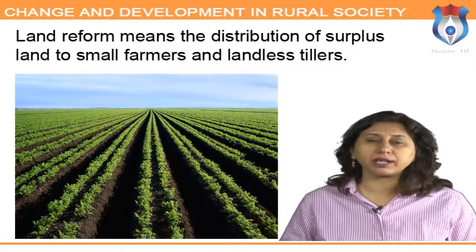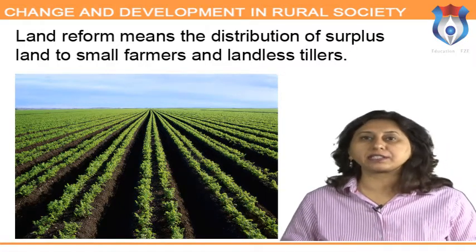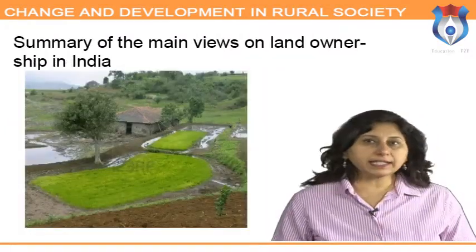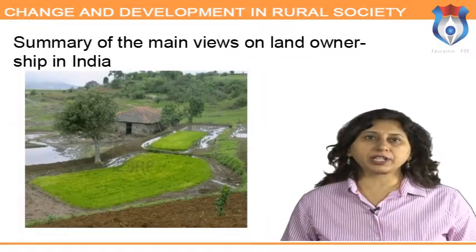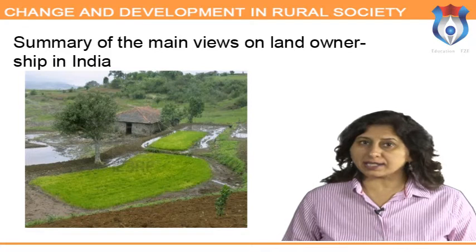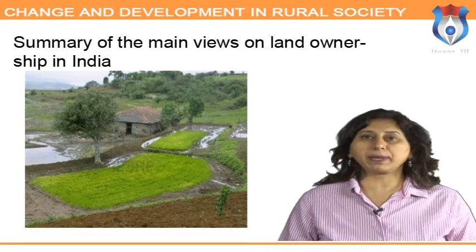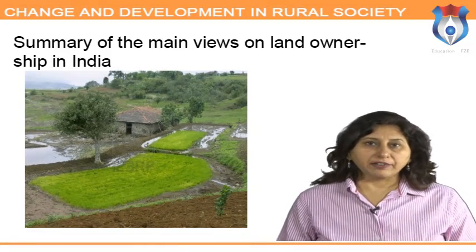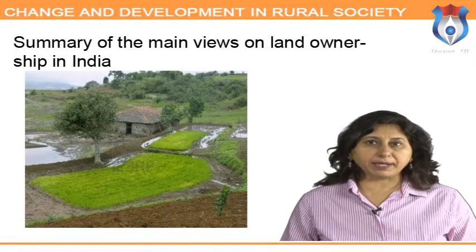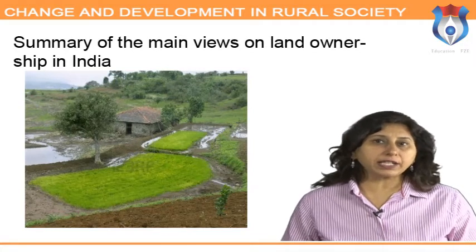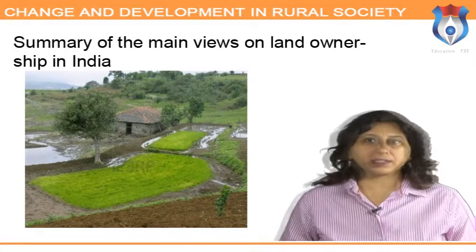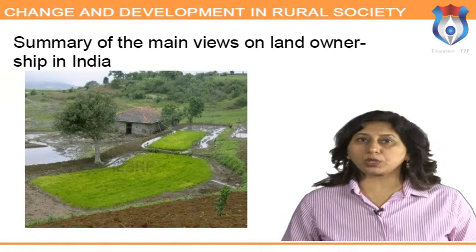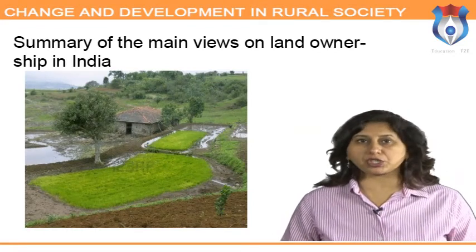The main objective of the land reform program is not only to increase agricultural production but also to build an egalitarian social order as contemplated under the Constitution of India. The Indian Taxation Inquiry Committee contains a summary of the main views on land ownership in India. The Rigveda Samhita shows that among the Indo-Aryans, arable land was held in individual ownership or family ownership.